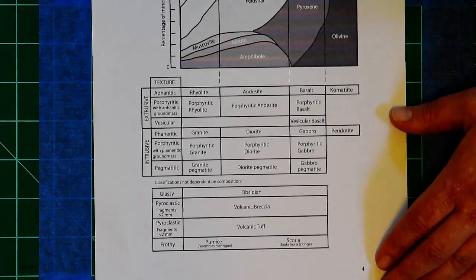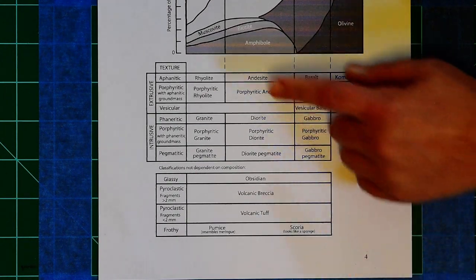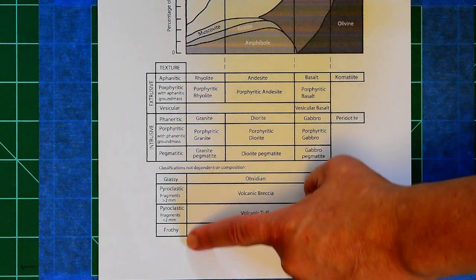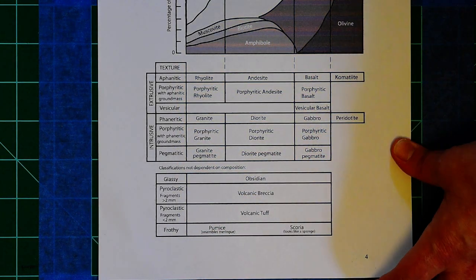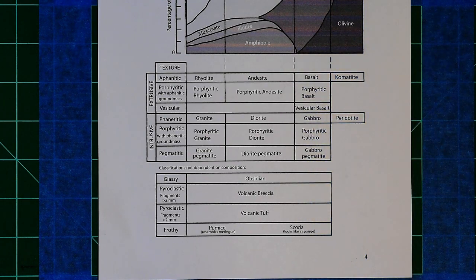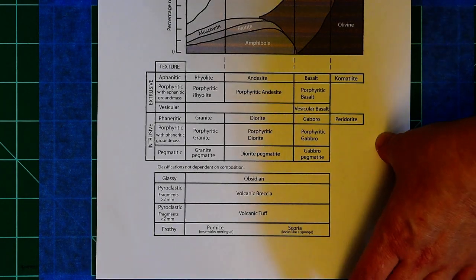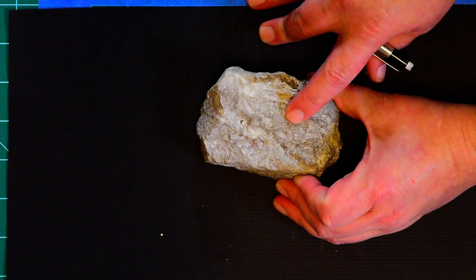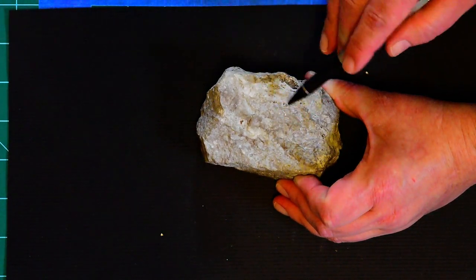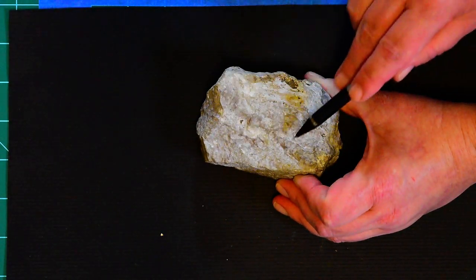Then down here in this part of the chart, we have the different textures. So let's, for example, identify an igneous rock. And actually, before we do that, let's just briefly review some of these different textures. For example, this rock would be aphanitic because we can't really see very many of the tiny microscopic little crystals that make it up.